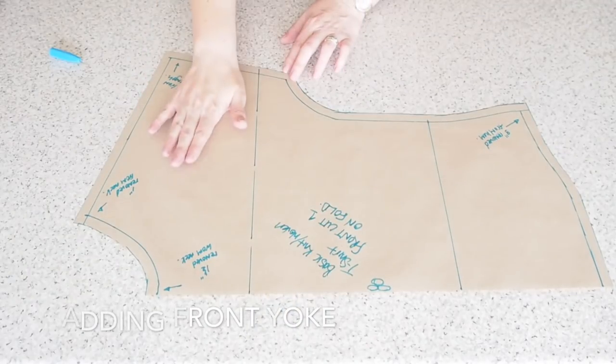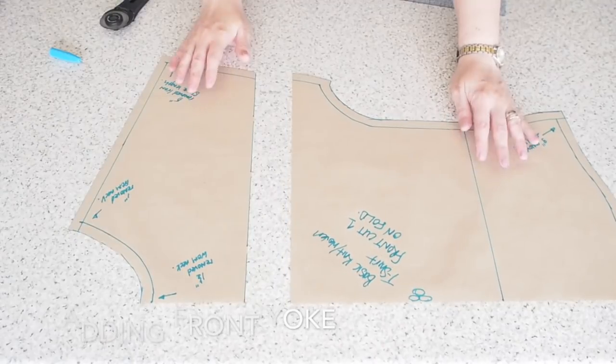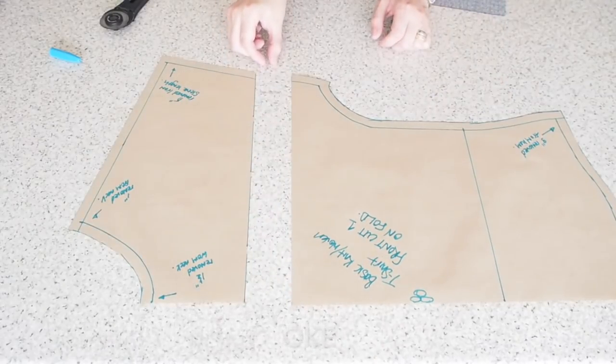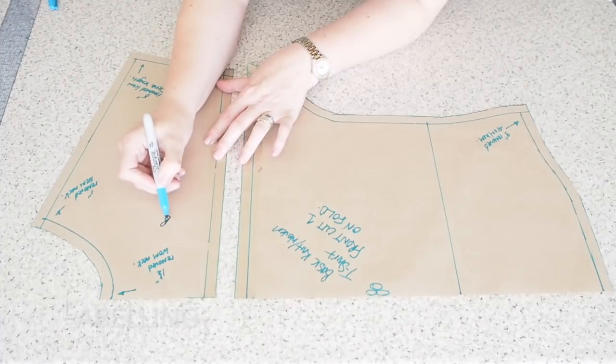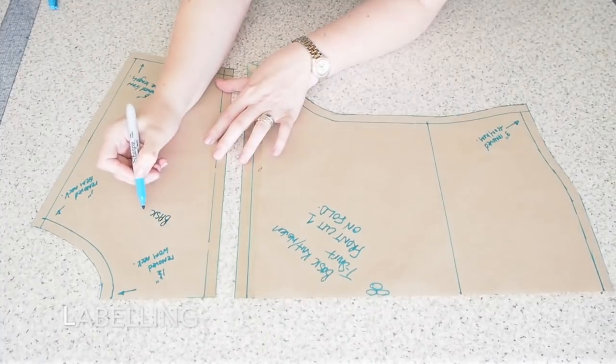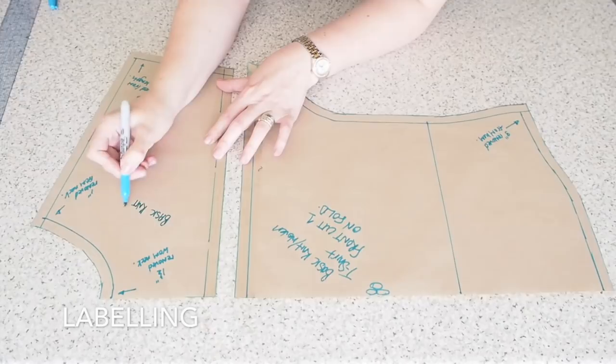So the part on the left will become my yoke and the part on the right will be my front bodice. So I've just separated those two pieces and added a one centimeter seam allowance to both. And just to label the yoke then.